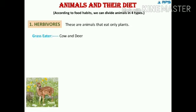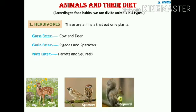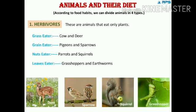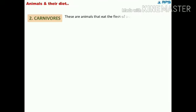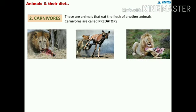Cow and deer eat grass; pigeons and sparrows eat grains; parrots, squirrels, grasshoppers, and earthworms eat leaves. The next category is carnivores. These are animals that eat the flesh of other animals after hunting. Carnivores are also called predators; the animals they kill and eat are called prey.